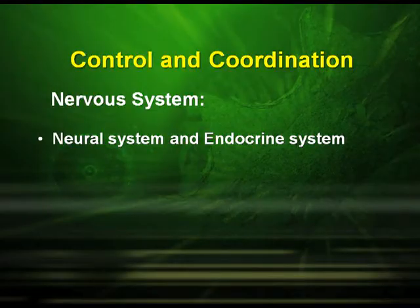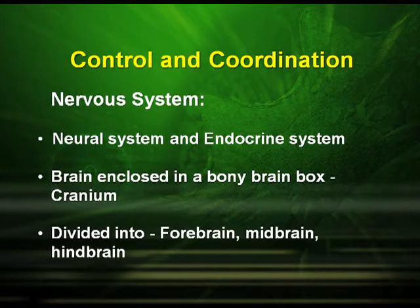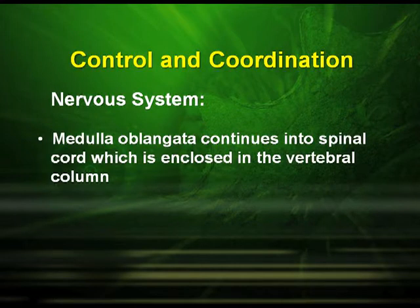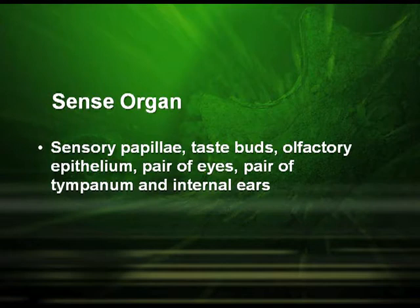Control and coordination in frog: the nervous system and endocrine system play a very important role. The brain is enclosed in a bony box called the cranium, and is divided into forebrain, midbrain and hindbrain. The medulla oblongata continues into the spinal cord, which is enclosed in the vertebral column. The sense organs are the sensory papillae, taste buds, olfactory epithelium, pair of eyes, pair of tympanum and the internal ears.